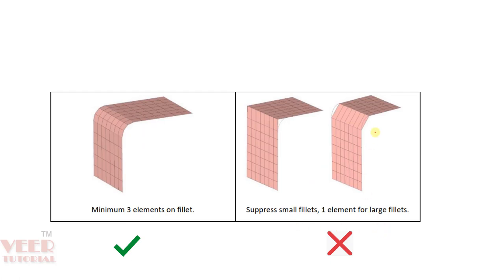In case of fillet, here we can see a fillet area. If we put a single layer of elements on the fillet, it will not capture the area properly because of the curvature — this portion is left empty. On the fillet area, we should try to have at least 3 minimum elements. For a smaller fillet, we can put 2 rows of elements, and for a larger fillet we should try to have minimum 3 rows so that it captures the surface properly. For a very small fillet, we can de-feature it and make a corner.